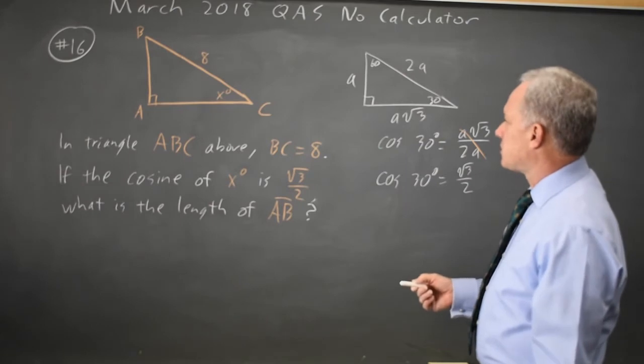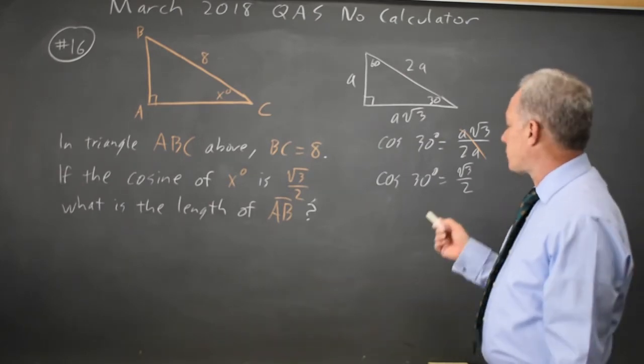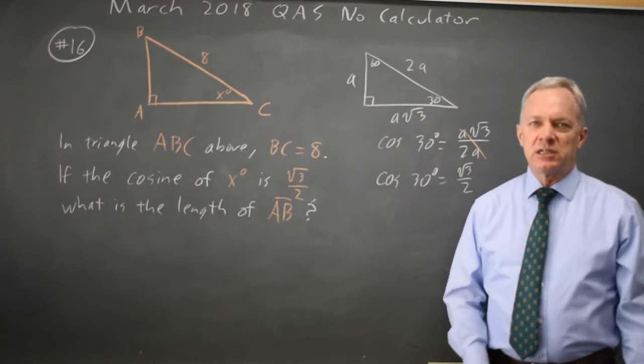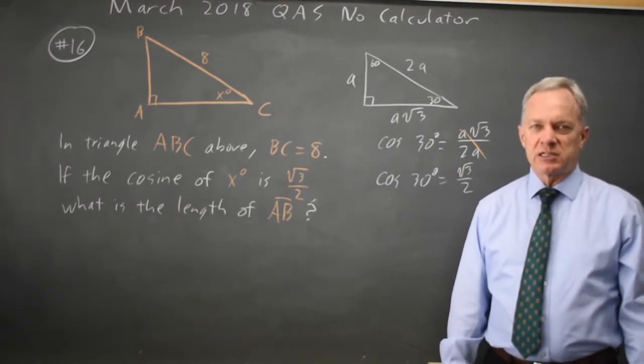This tells us that since the cosine of X degrees is root 3 over 2, and the cosine of 30 degrees is root 3 over 2, X is 30 degrees.